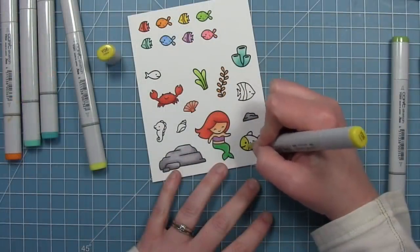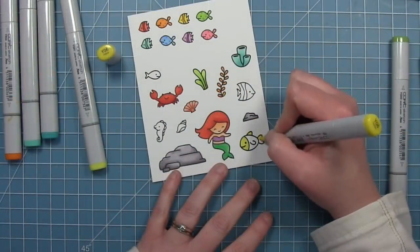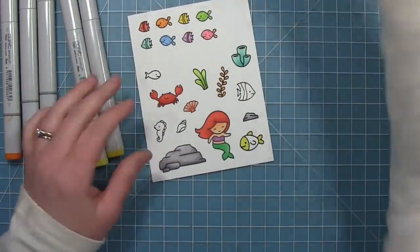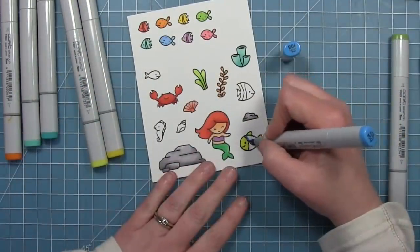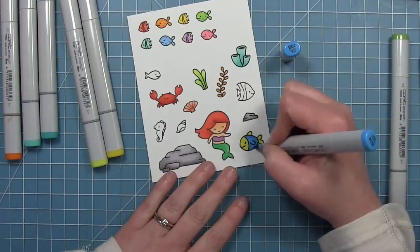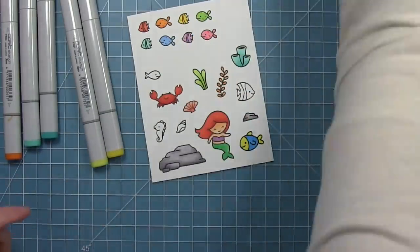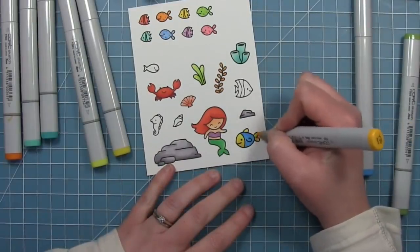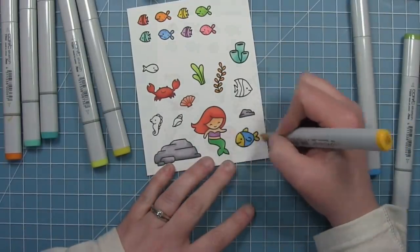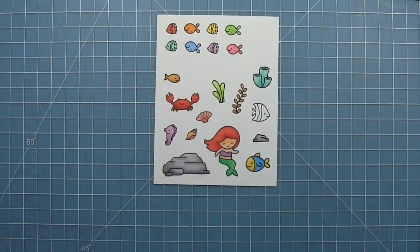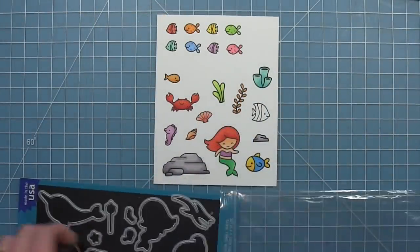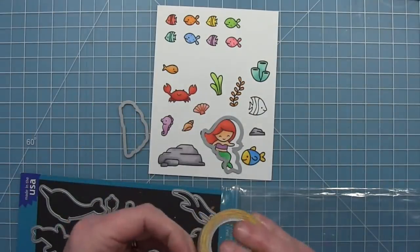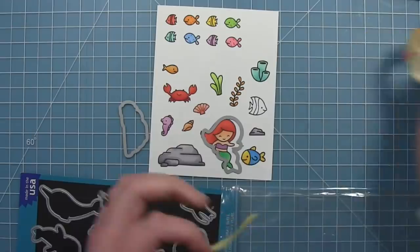And then my last one will be pink. I went ahead and colored some of the sea life and seaweed. This little guy I'm coloring here, he's sort of my version of flounder. I don't really have a flounder fish facing the right direction. So I'm coloring him in blues and yellows, he's flounderish I should say. And now that I've got all my images colored, I'm just going to use the coordinating dies that go with all these images and cut all of them out.